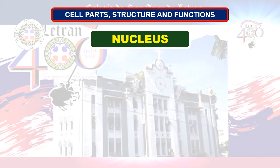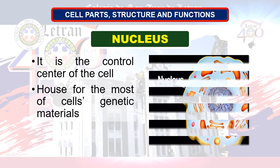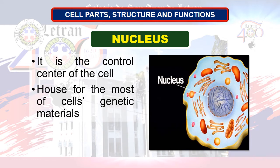Next organelle: nucleus. The nucleus is the control center of the cell. It is the house for most of the cell's genetic materials. This is the largest and one of the most important structural areas. It plays a central role in cellular reproduction and interaction with the environment, and also in determining what sort of differentiation a cell undergoes and what form it will exhibit at maturity. It also directs the metabolic activities of living cells.